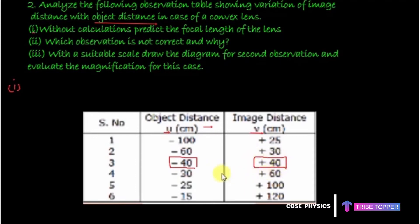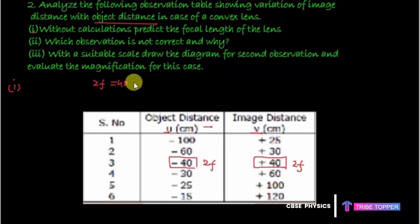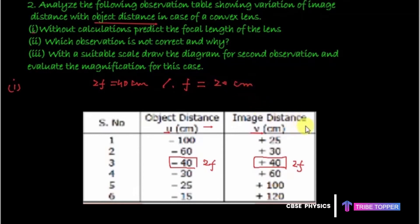Looking at the table, there is one observation where the object distance and image distance are the same. This is the position of the object for which the size of the image and object are also the same, and that position is 2f. So the object is placed at 2f and the image is formed at 2f. Since 2f equals 40 cm, therefore f equals 20 cm. We don't need any formula — we simply identify that equal u and v occur only when the object is at 2f from the pole, giving f = 20 cm directly.